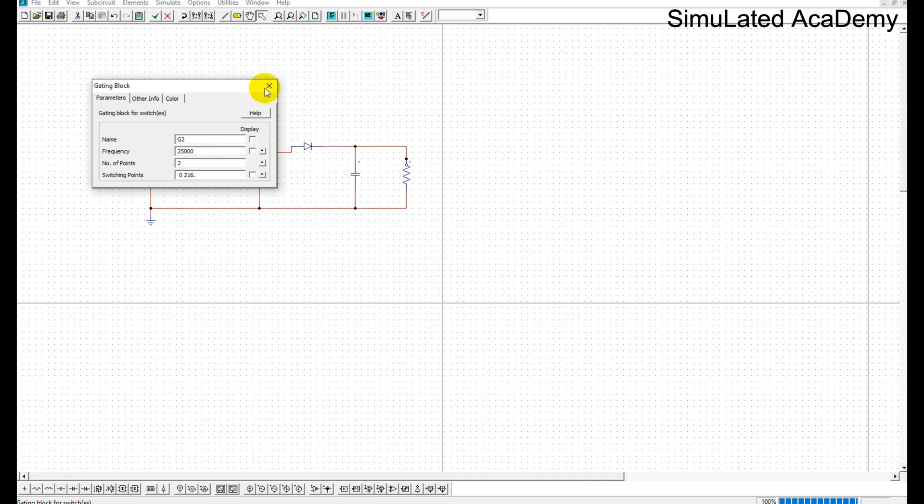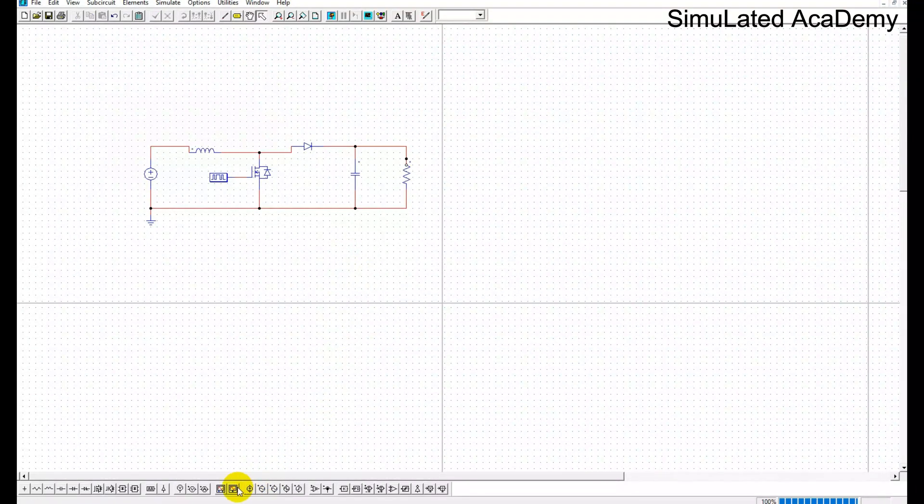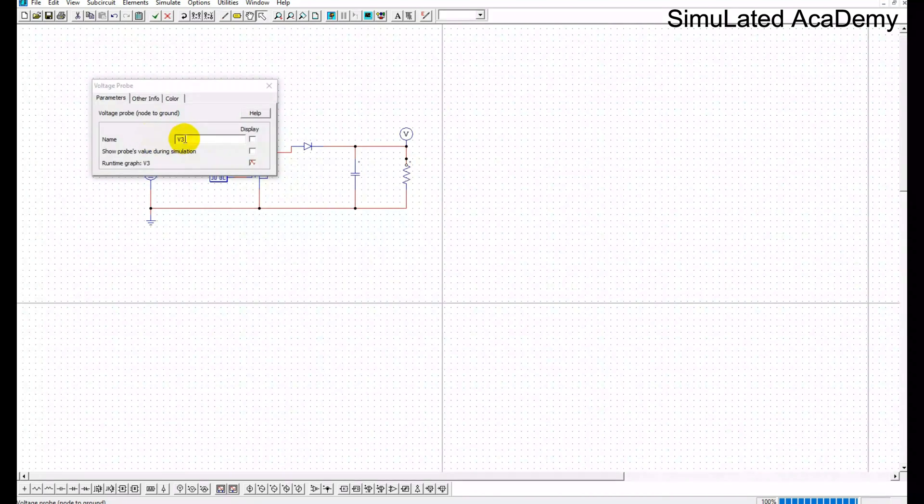Now I'll take the output voltage at this point. Click this one and place it here, and this is my Vin and this is my Vout.